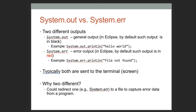One more thing: we've talked a lot about System.out.println — this sends text to the console. There's also a different output for printing error messages: System.err.println. By default, Eclipse also sends this to the console, but you can redirect it to a file or a different console or any other data sink. It's very common to take System.err and redirect it to a log file to capture those errors.